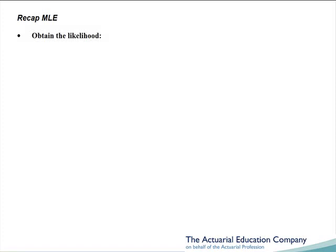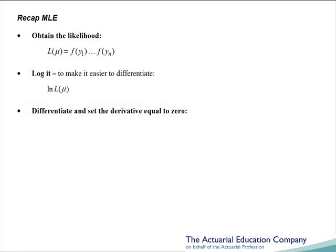First of all, we obtain the likelihood. If we were estimating the mean, and we have claims data y1 to yn, then our likelihood is defined to be the product of the PDFs. We then log the likelihood, so that it was easier to differentiate. This gives us, unsurprisingly, the log likelihood. Then we differentiated this with respect to mu, and set the derivative equal to 0. We then rearranged this, and that obtained our estimate for mu. We then checked to see that we obtained the maximum by differentiating it a second time. And if the second differential was negative, we had a maximum. Now technically we're finding the mu which maximizes the log likelihood, but since a log function is monotonically increasing, if we maximize the log likelihood, we will maximize the original likelihood.